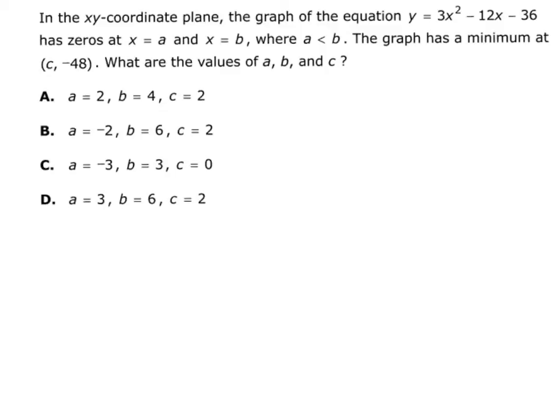Okay, so let's look at today's problem of the day. Let's read it real quick. In the x-y coordinate plane, the graph of the equation y equals 3x squared minus 12x minus 36 has zeros at x equals a and x equals b, where a is less than b.